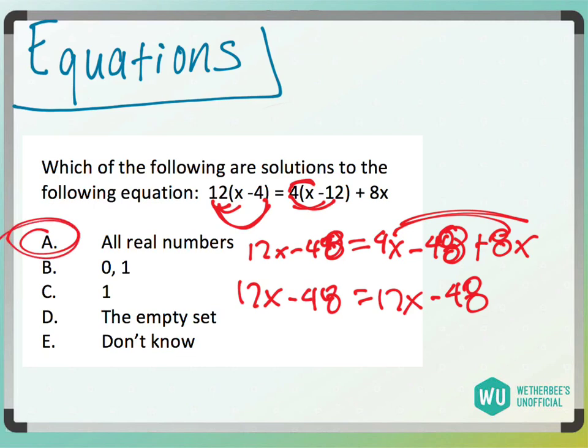It would be all real numbers. 12x minus 48 always equals 12x minus 48. It doesn't matter what number I put in for this x, for these x's. It's always going to equal one another,